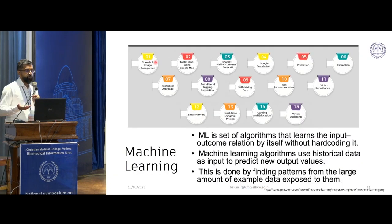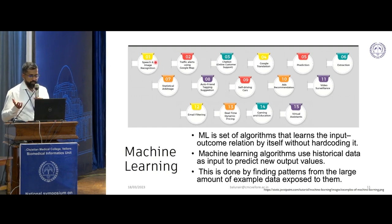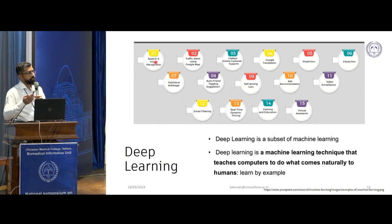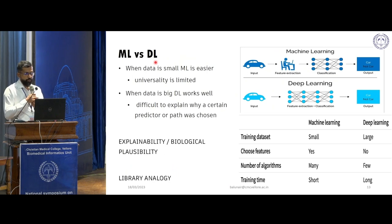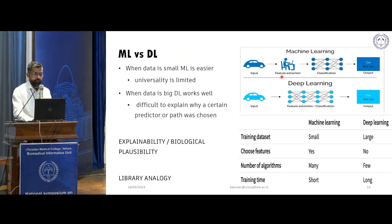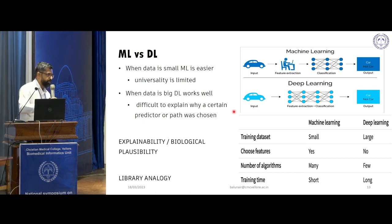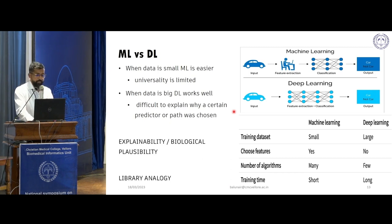Machine learning is a set of algorithms that learns the input-output relation by itself without hard coding. Deep learning is a subset of machine learning. What is the difference between these two? As Andrei showed yesterday, the deep learning model does not have a human element to it, while machine learning is heavily controlled by humans.